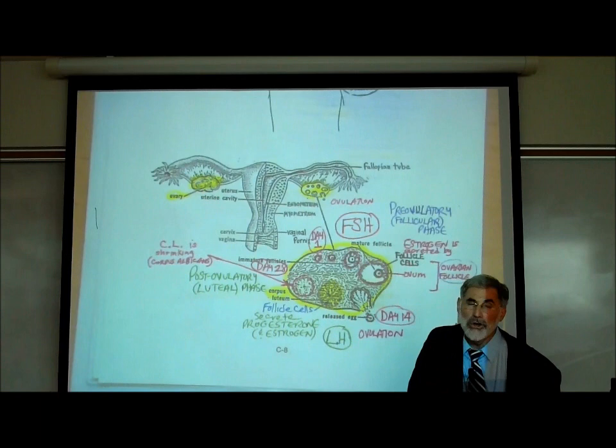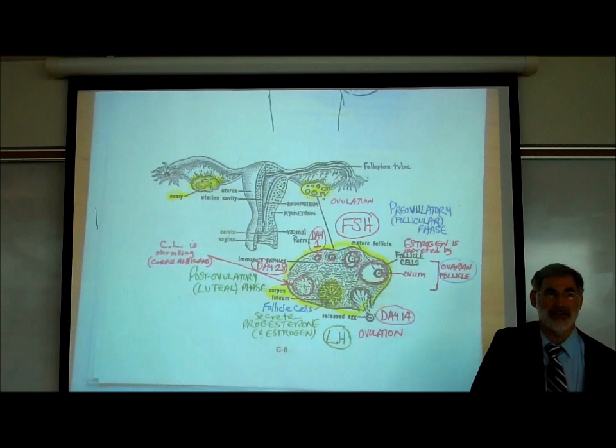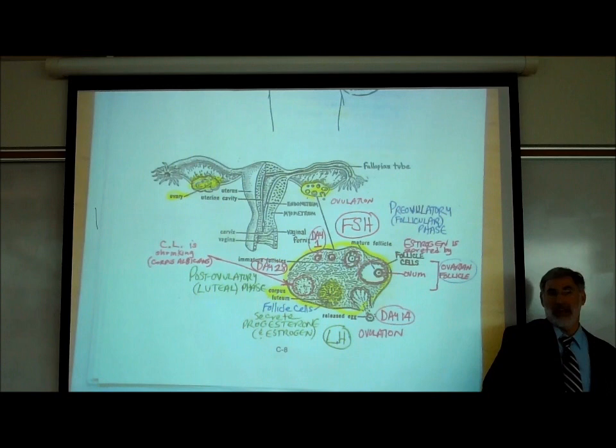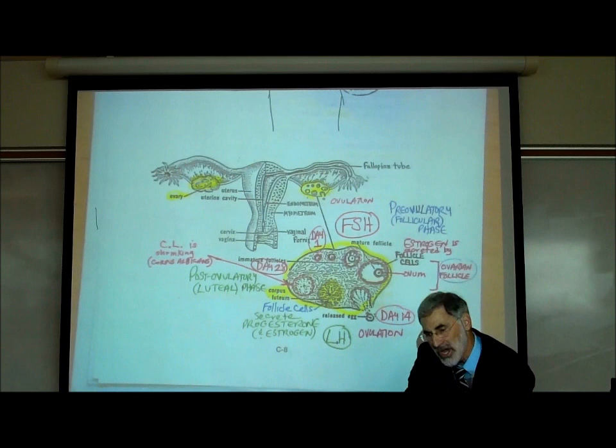The thicker outer layer is called the myometrium. 'Myo' means muscle, 'metria' means uterus — that's the outer muscular layer of the uterus. The purpose of the muscle is to contract and push the baby out during childbirth. Sometimes the muscle can contract even when not giving birth — that's called uterine cramping. The bottom part of the uterus is called the cervix, and it opens into the vagina, or birth canal.